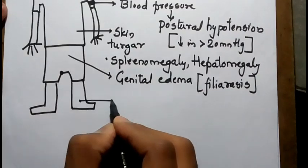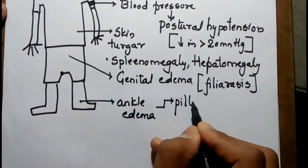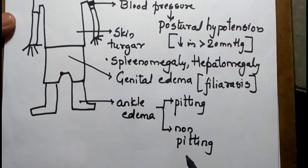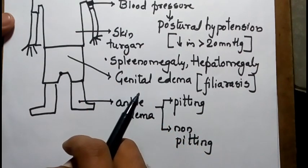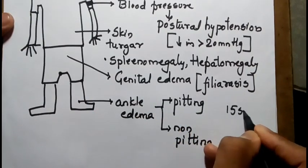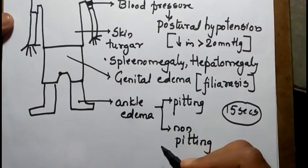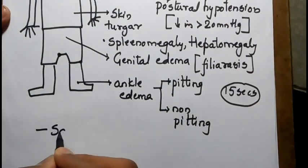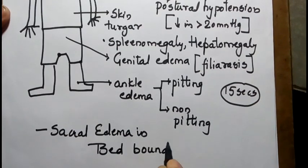We should check for ankle edema, which may be pitting or non-pitting. This is assessed by pressing the thumb or index finger over the ankle or any bony prominence for 15 seconds. On releasing pressure, if a pit (imprint) is formed it is called pitting edema; if not, it is called non-pitting edema. We should also check for sacral edema in bed-bound patients.